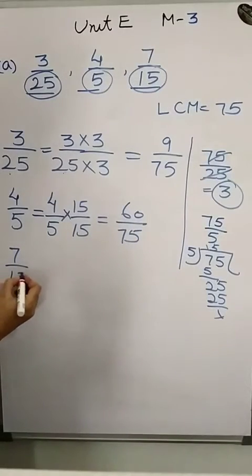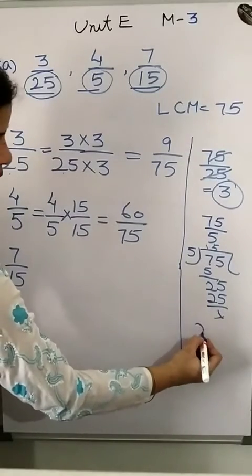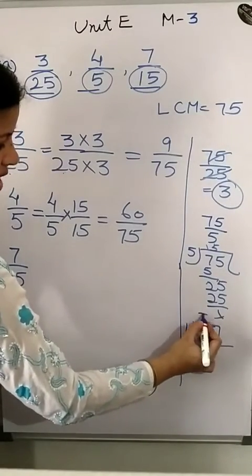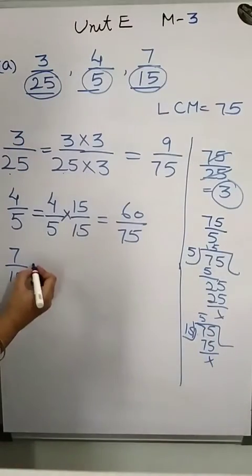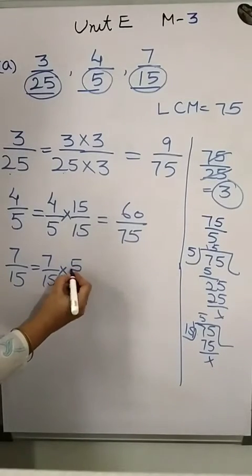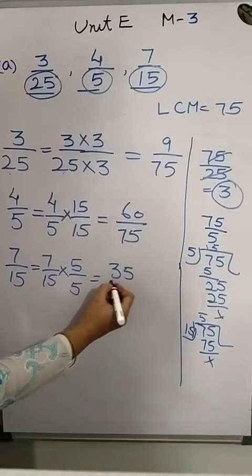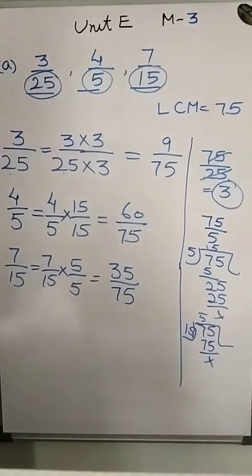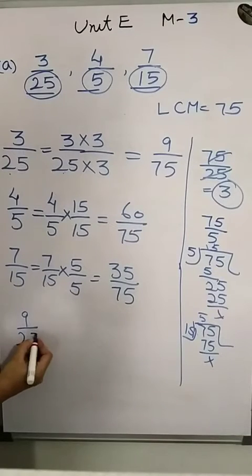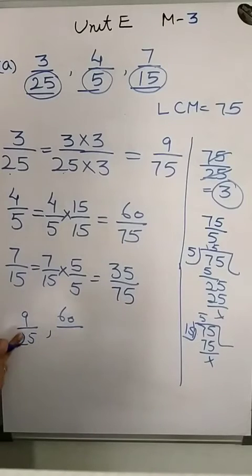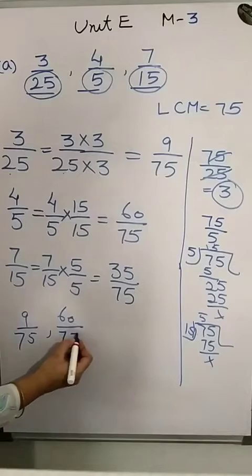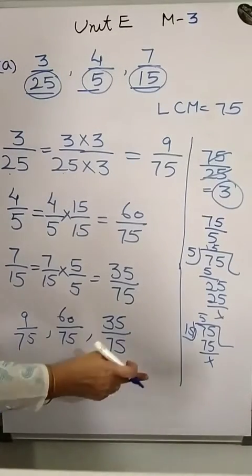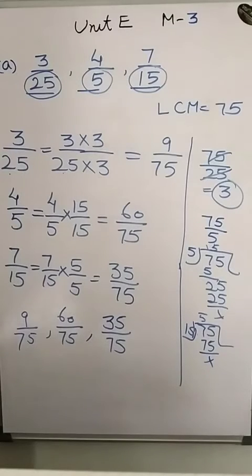For 7 upon 15: divide 75 by 15 to get 5, so multiply 7 upon 15 by 5 upon 5. This gives 35 upon 75. So all three numbers converted to like fractions are: 9 upon 75, 60 upon 75, and 35 upon 75.